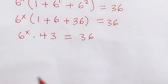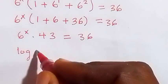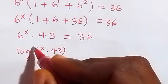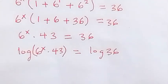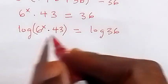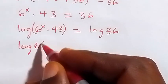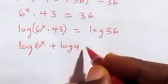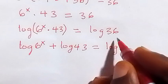In the next step, let's take the log on both sides. So we have log of 6 raised to power x times 43, then equals to log 36. From here, applying the law of logarithms, we can separate multiplication into two logs, and this will give us log 6 raised to power x, plus log 43, then equals to log 36.